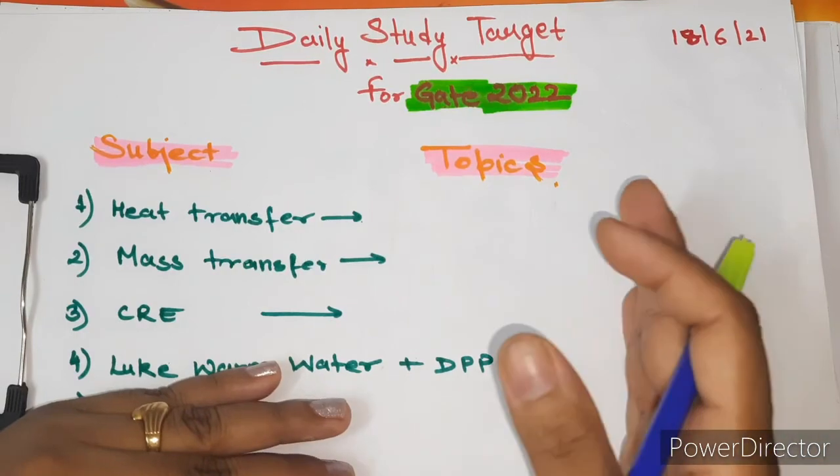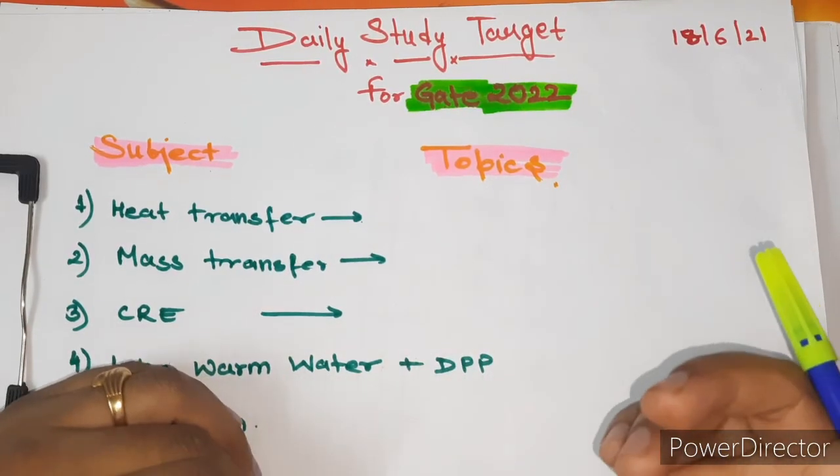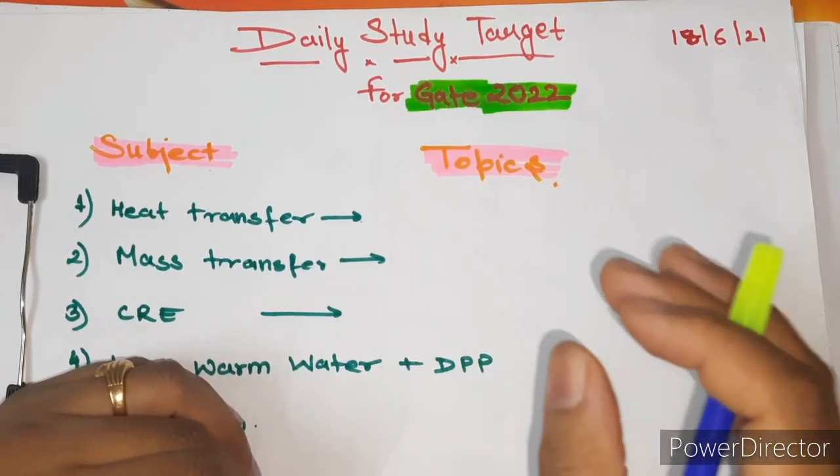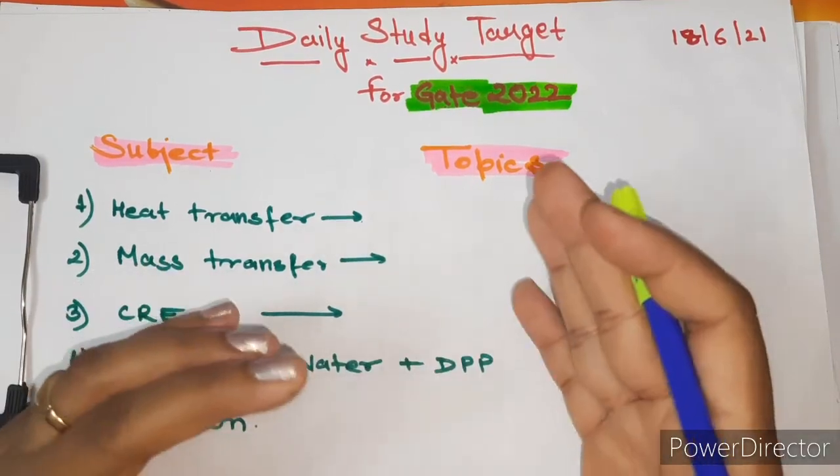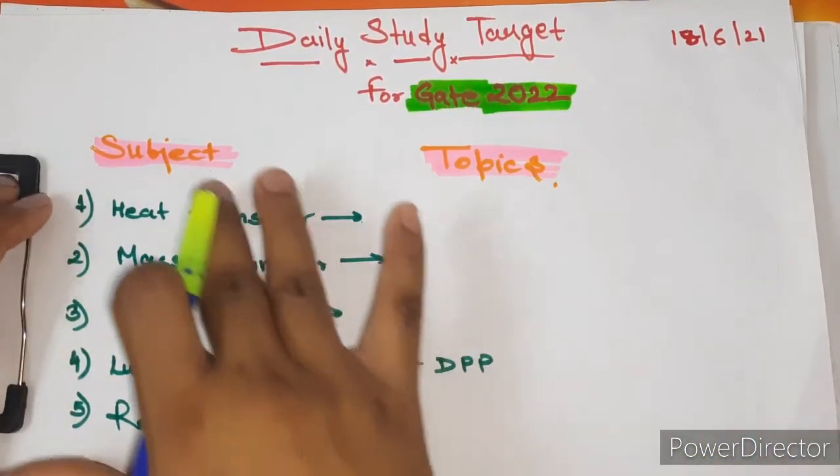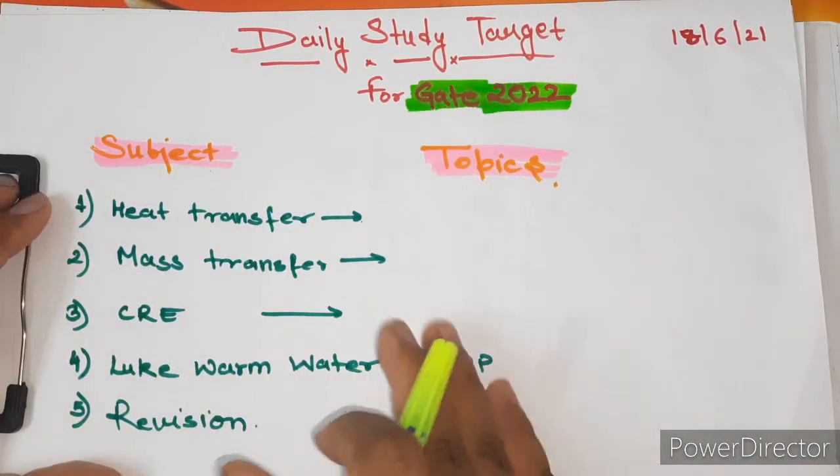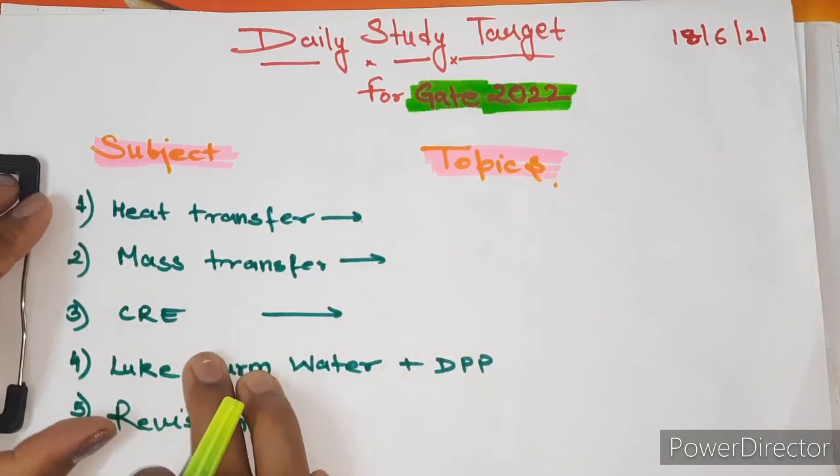So without wasting time, let's get started. From the previous lecture, you get to know that I am studying 3 subjects parallelly: heat transfer, mass transfer and CRE.